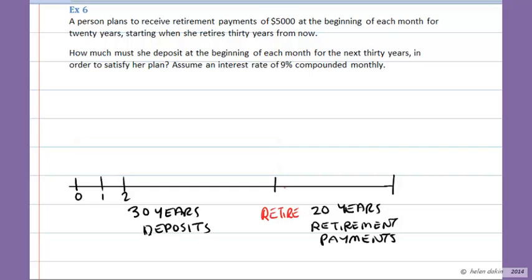And we've got 30 years of deposits. And then she's going to be making 20 years of retirement payments or withdrawals. She wants to receive $5,000 at the beginning of every month for 20 years, starting when she retires 30 years from now. So 30 years from now is going to be 360 months. So 360 months, she's going to be making withdrawal of $5,000 at the beginning of every month.